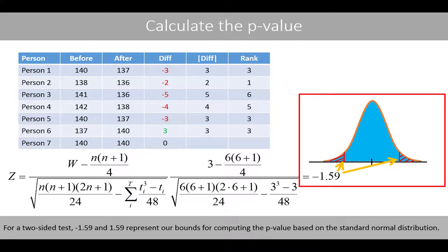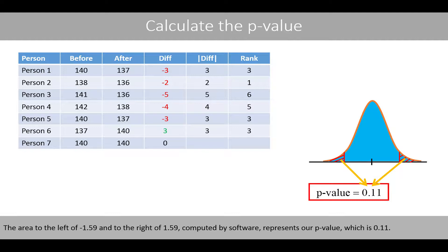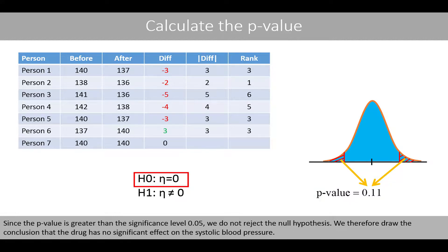For a two-sided test, negative 1.59 and positive 1.59 represent our bounds for computing the p-value based on the standard normal distribution. The area to the left of negative 1.59 and to the right of positive 1.59 gives a p-value of 0.11. Since the p-value is greater than the significance level of 0.05, we do not reject the null hypothesis and conclude that the drug has no significant effect on systolic blood pressure.